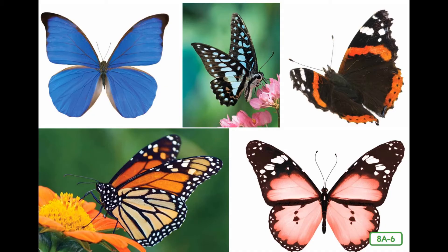The smallest butterfly is the western pygmy blue from Africa. Incredibly, butterflies can only fly when their bodies are warm enough — their body temperature must be 85 degrees Fahrenheit to take to the air. The fastest butterflies can fly at 12 miles per hour, and they cannot move at all if their body temperature drops below 55 degrees Fahrenheit. Now that you know some interesting facts about butterflies, it's time to find out about their life cycle.